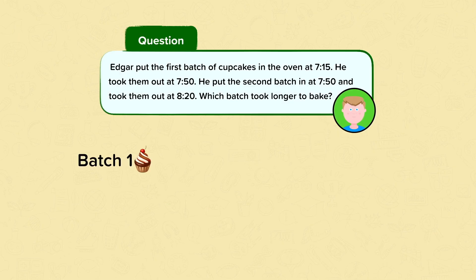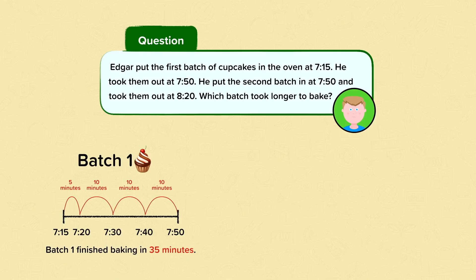Now we're going to compare duration. Edgar put the first batch of cupcakes in the oven at 7:15. He took them out at 7:50. He baked them for 5 minutes to 7:20, then another 10 minutes to 7:30, then another 10 minutes to 7:40, and then another 10 minutes to 7:50. We can count this up to know that batch 1 finished baking in 35 minutes.